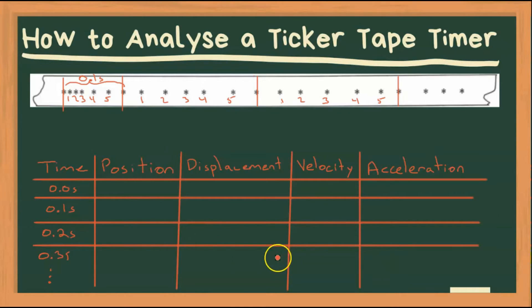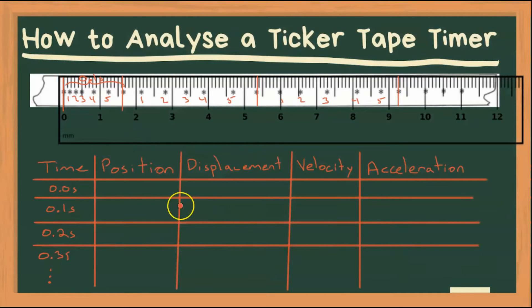All right, so here's our table. Next we're going to need a ruler to make some measurements. All right, and we have the ruler aligned so that that initial marking is going to be the zero mark, so our initial position is zero.